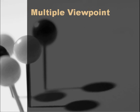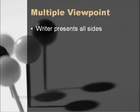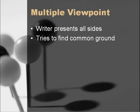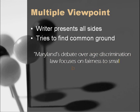Now contrast the single viewpoint paper with the multiple viewpoint paper. Here, the writer's purpose is to present all sides of the issue, not just one, in an even-handed, objective way. Then, at the end, the writer will try to reconcile the different points of view or find common ground among them. So our example thesis would change to something like: Maryland's debate over age discrimination law focuses on fairness to small businesses. You see, no side is taken in the multiple viewpoint paper — clearly the writer will present both sides of this debate.